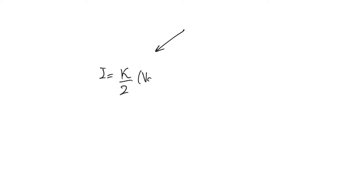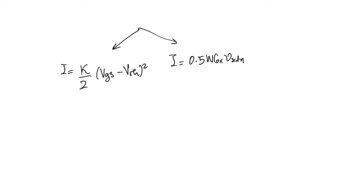When we talked about the two saturation currents that we can have, we found that one of them was I equals K over 2 times (VGS minus V_threshold) squared. The other was I equals 0.5 * W * C_oxide * V_sat_N, in the case of an NMOS, times (VGS minus V_threshold minus 0.5 * VDS_sat). So these are both saturation currents — we're not talking about ohmic currents.